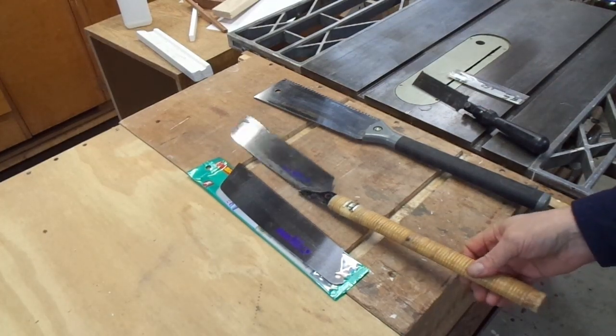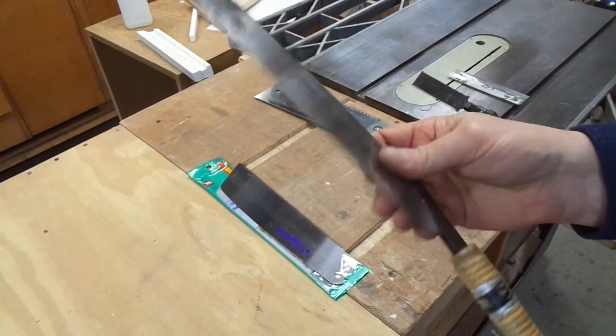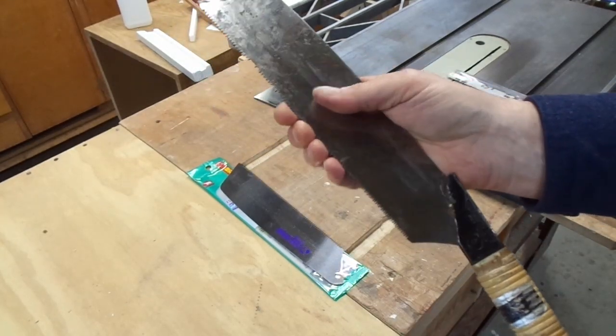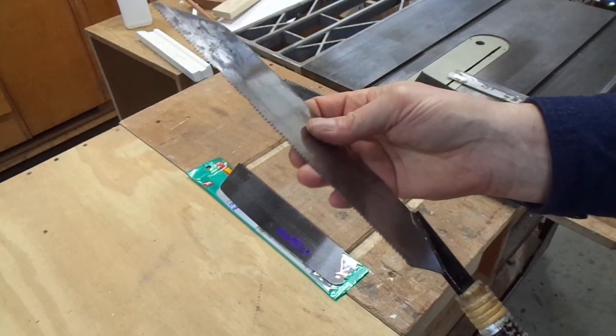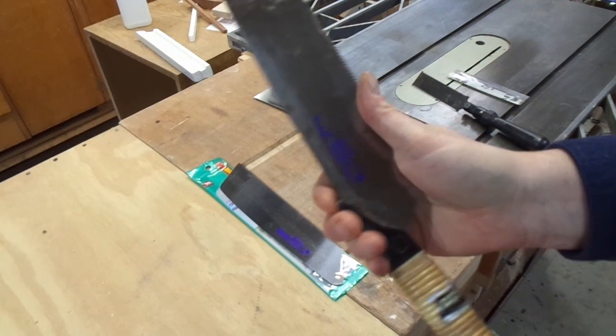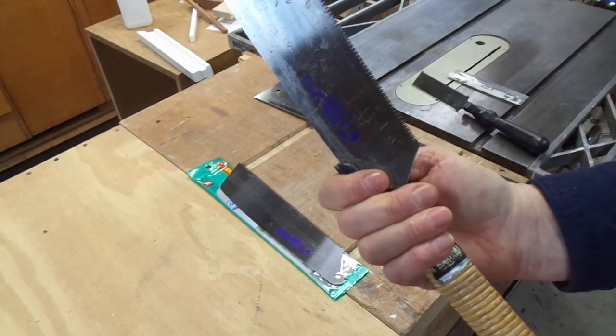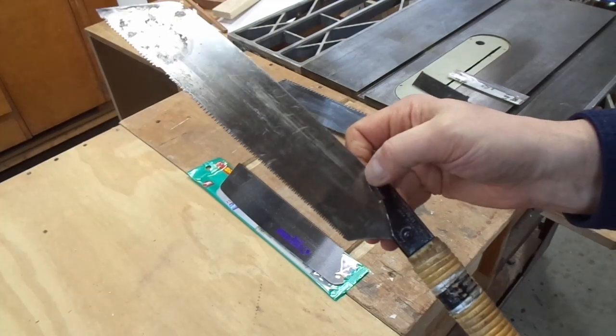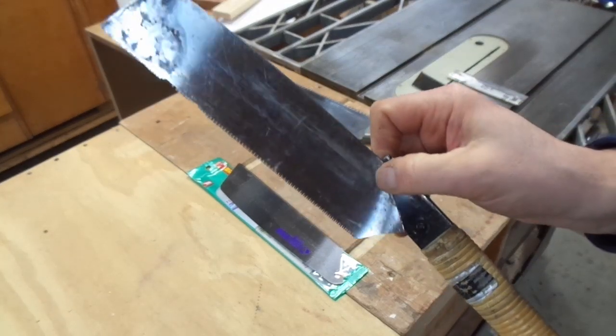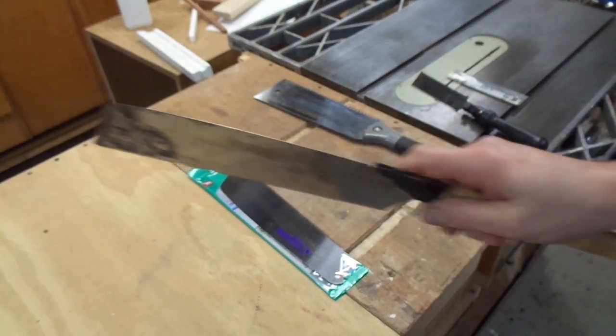I grew up using Western style saws. As a young man I read about Japanese pull saws and their narrow kerf and was intrigued. In the 1990s I was in a Rockler and purchased the saw and fell in love with it almost immediately. The narrow kerf makes for much less laborious effort when doing a crosscut.